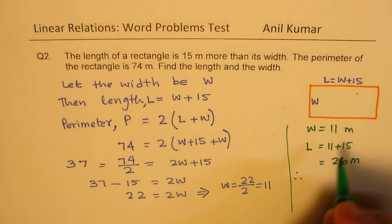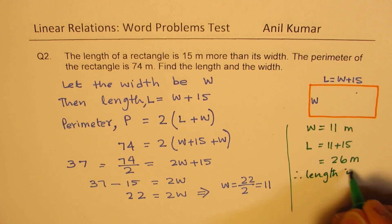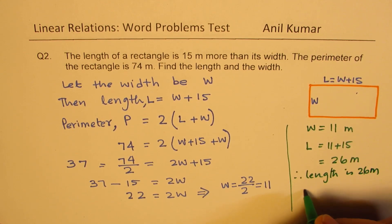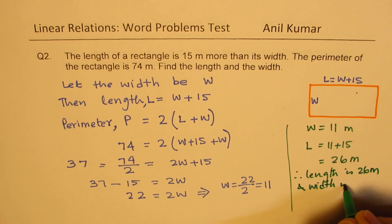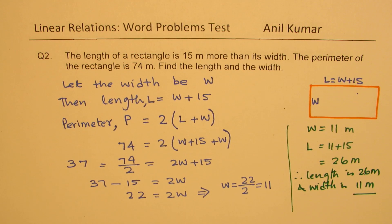Find the length and width. Therefore, length is 26 meters and width is 11 meters. So that is how you're going to write the answer. I hope the steps are absolutely clear.